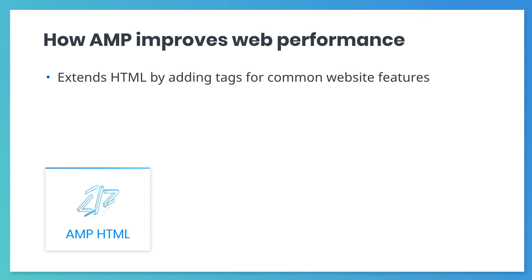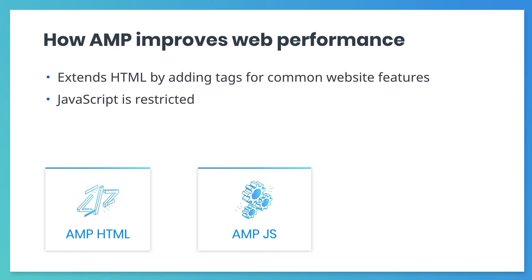First of all, AMP extends HTML. It adds new HTML tags for common modern website features, like slide-out navigation menus, video players, image carousels, and so on. Second, AMP reduces the amount of JavaScript used on websites. It places restrictions on where and how JavaScript should be used. AMP components provide much of the functionality that developers use JavaScript for in the first place. When there's less JavaScript, site performance improves drastically, especially on mobile devices.